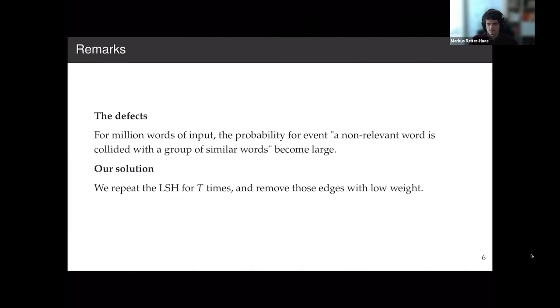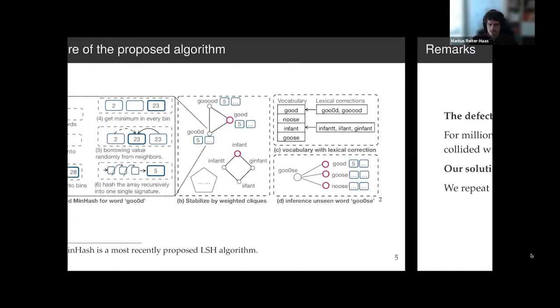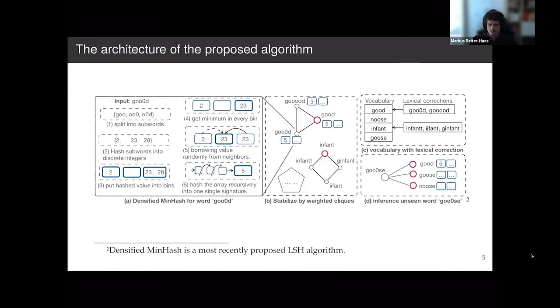I would like to mention some remarks, which is the defect of the locality-sensitive hashing algorithm. If we want to process a medium word, then the probability of a non-relevant word being collected with a group of similar words becomes huge, meaning by using the algorithm, we can find it sometimes includes a dissimilar word. This will clearly make the algorithm become not that good.